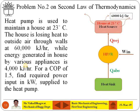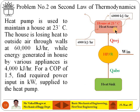At the same time, there are certain appliances which are adding 4,000 kJ per hour of heat inside the room. So basically, along with the heat pump, there are some appliances which are also adding heat to the room or the space.